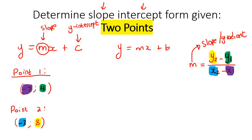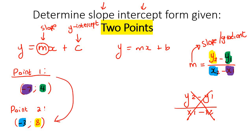What is completely wrong is if you do y2 minus y1 at the top and then switch it around at the bottom — that's completely wrong. Another question that learners always ask me is: does it matter which one is point one and point two? Not at all. You could have made this one your point two and this one your point one. That doesn't matter.